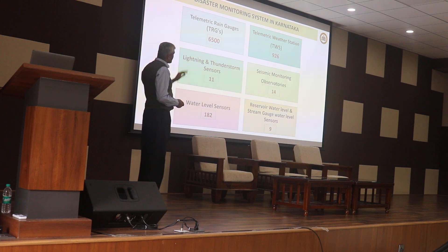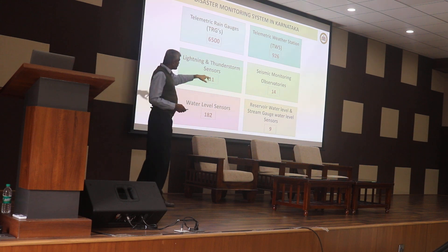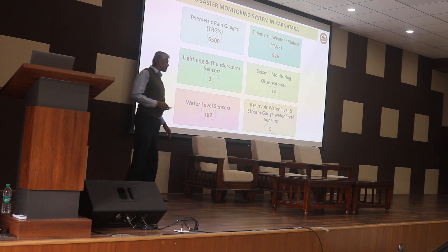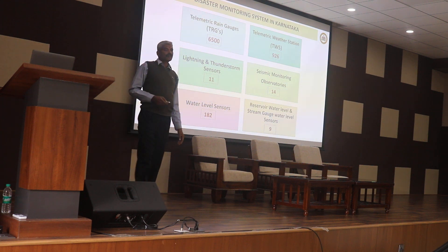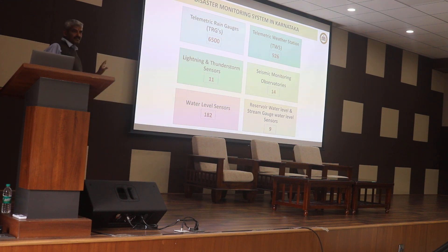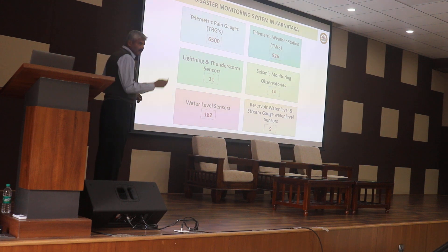The density of this network — 6,500 telemetric rain gauges and telemetric weather sensors — is unlike anywhere else in the country for disaster monitoring. Each rain gauge station is placed on a 25 square kilometer grid. The state center has become a nodal center for other states like Uttarakhand, Uttar Pradesh, Bihar, Tamil Nadu, Kerala, and Maharashtra, whose disaster management authorities visit our center to learn from this model.